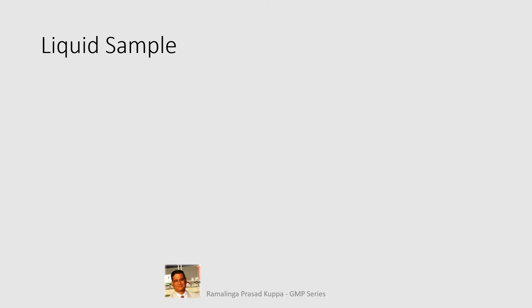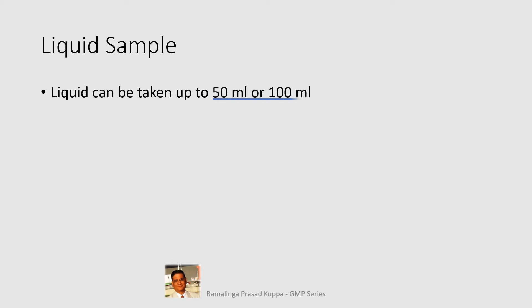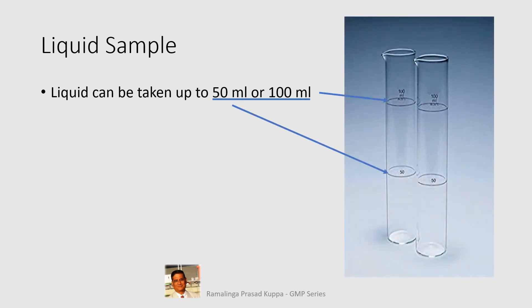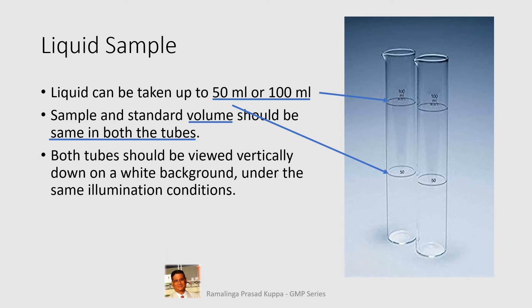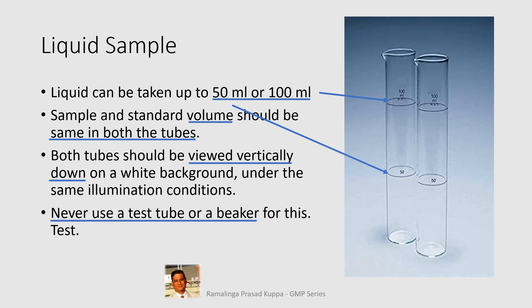Let us see how a liquid sample is taken for testing. A liquid sample can be taken up to 50 ml or 100 ml. Sample and standard volumes should be placed in both tubes. Both tubes should be viewed vertically down on a white background under the same illumination conditions. Never use a test tube or beaker for this test. Matched tubes of 25 ml are also available. The key point is that liquids or solutions should be compared in two cells — one with the sample and the other with the standard.